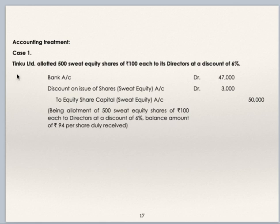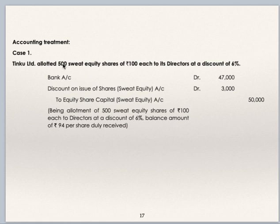We will see one question. Tinku Ltd allotted 500 sweat equity shares of Rs 100 each to its directors at a discount of 6%. Face value is Rs 100, discount is 6%, so discount amount is Rs 6, meaning amount received per share is Rs 94. Journal entry: bank account debit — 500 × Rs 94 = Rs 47,000; discount on issue of shares account debit — 500 × Rs 6 = Rs 3,000; to equity share capital account — 500 × Rs 100 = Rs 50,000. Being allotment of 500 sweat equity shares of Rs 100 each to directors at a discount of 6%, with the balance amount of Rs 94 per share duly received.